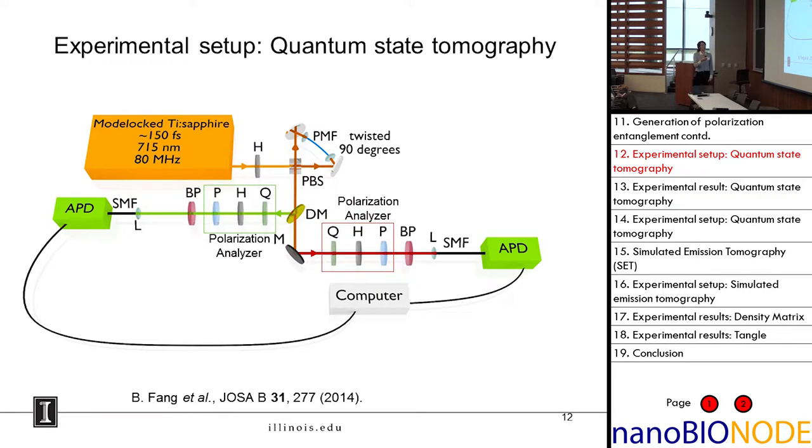We can then separate the two photons. They're at different frequencies, so we can just use a dichroic mirror to separate them. The signal photons will go this direction, the idler photons this direction. Then we can measure their polarization states with a quarter half wave plate and polarizer. We clean up the spectrum a bit, and we count coincidences using avalanche photodiodes.